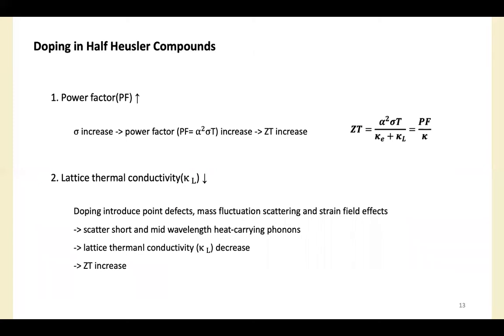The first method to improve thermoelectric performance is doping. Via doping, we can tune the carrier concentration. It is possible to dope each of the three occupied FCC sublattices individually due to specific structural features. As carrier concentration increases, electrical conductivity increases, then power factor and ZT value increase accordingly. And doping in half-Heusler compounds also introduces point defects, mass fluctuation scattering, and strain field effects that can be utilized in order to effectively scatter short and mid-wavelength heat-carrying phonons. So by reducing thermal conductivity value and increasing power factor, we can have significantly high ZT value.